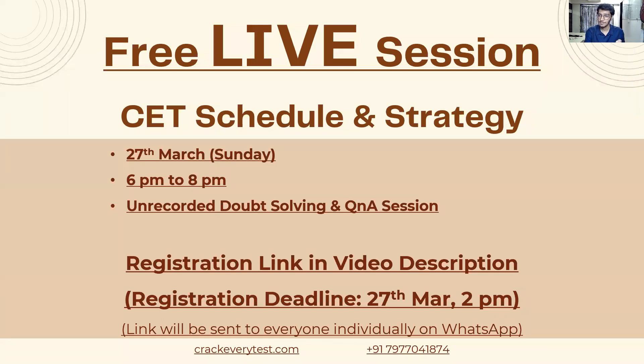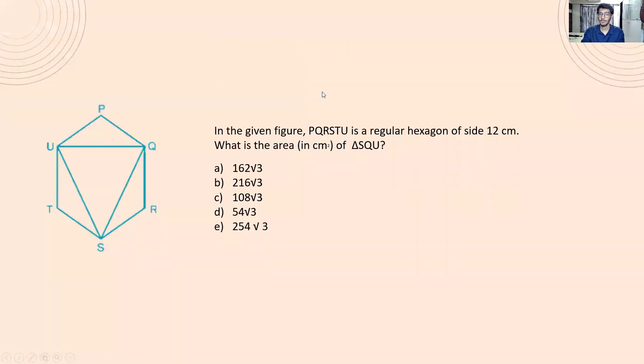Let's start with geometry. In the given figure, PQRSTU is a regular hexagon of side 12 centimeters. So 12 centimeters, I'll just make the pencil thinner. This is 12 centimeters, so all of them obviously are 12 centimeters. Now what is the area in centimeter square of triangle SQU? That's how a hexagon is made.